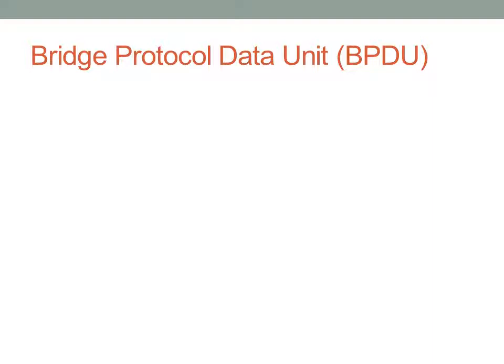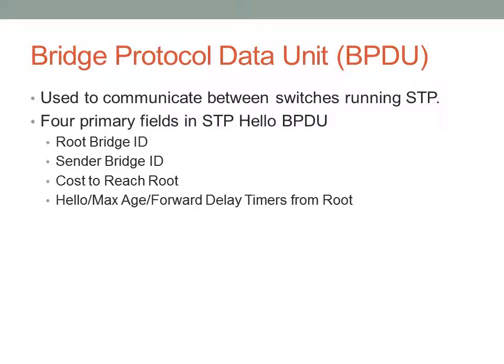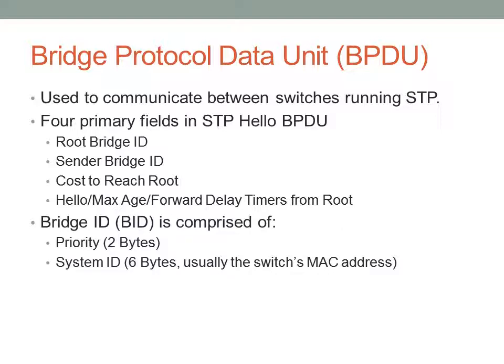Now we need to discuss the basic building blocks of spanning tree. The basic building block is called the Bridge Protocol Data Unit — the BPDU. This BPDU is used to communicate between switches running spanning tree protocol. There are four primary fields: the root bridge ID, the sender bridge ID (the bridge ID of the switch sending the BPDU), the cost to reach root, and the hello, max age, and forward delay timers coming from the root switch. This bridge ID is composed of two parts: a priority which is two bytes long, and a system ID that is six bytes long — normally just the switch's MAC address, although you can administer either of these fields.